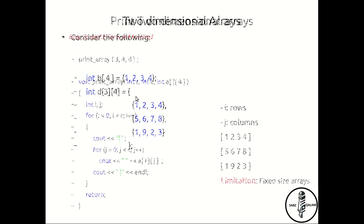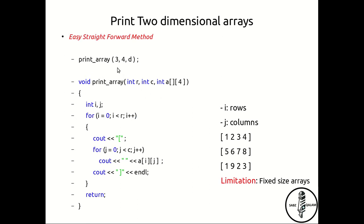Now, if you want to pass this on to another function, this is one such function. Here, integer R represents rows, C represents columns, and integer array A, square bracket, and then square bracket within that four.